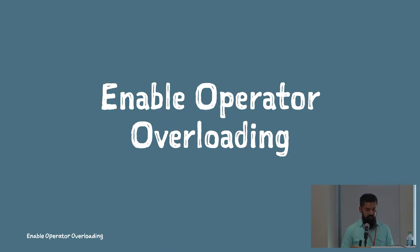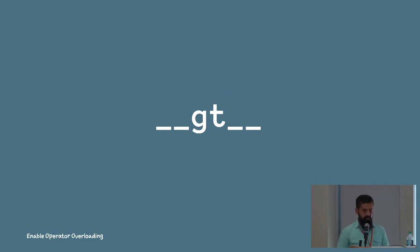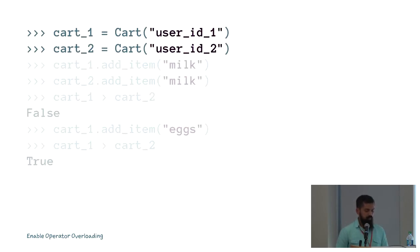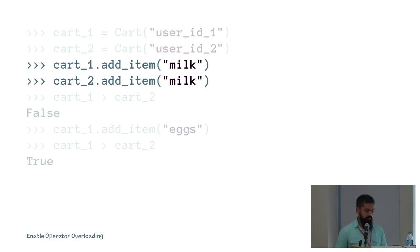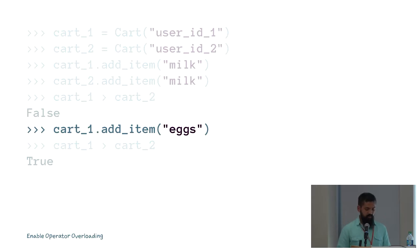The next group of magic methods enables operator overloading. The first one is dunder gt. Implementing this lets you support comparison on your objects — specifically checking whether one object is greater than another. In this case I'm returning true if the number of cart items in one object is greater than in the other. When I create two new cart objects and add one item into each, 'cart one > cart two' evaluates to false. When we add another item into cart one, it evaluates to true.